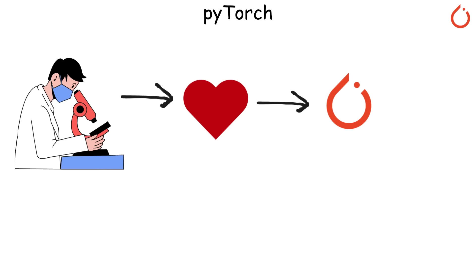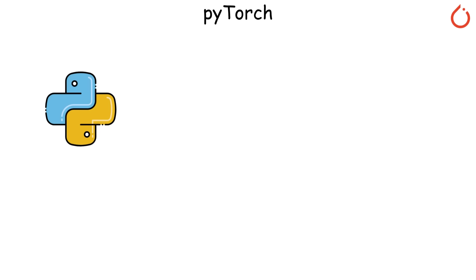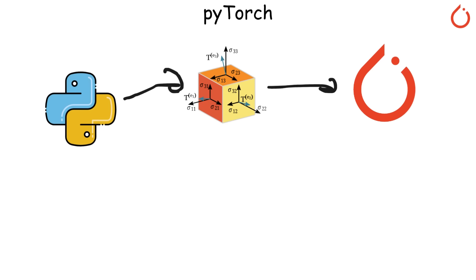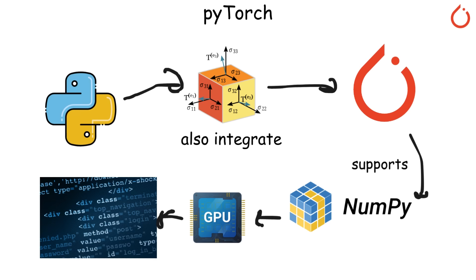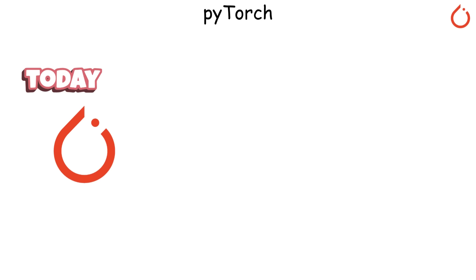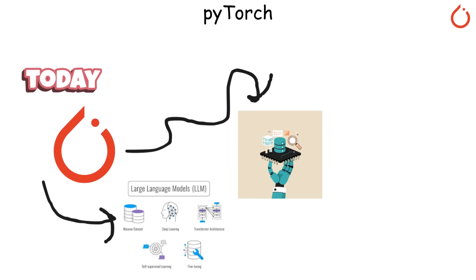Researchers love PyTorch because it feels natural — it's just Python with tensor support. It also integrates tightly with tools like NumPy and supports GPU acceleration with minimal code. Today, PyTorch has become the go-to framework for AI research and modern LLM development.